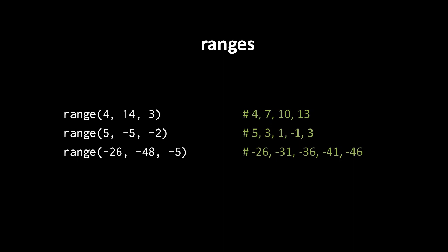In the second range example, we have a starting value of positive 5, an end value of negative 5, and a step of negative 2. So we start out at 5 and go to 3, 1, negative 1, negative 3. Negative 5 itself is not included because negative 5 is less than or equal to the specified end value, which is negative 5. And finally, a range starting at negative 26, going to negative 48 with a step of negative 5, gets us: negative 26, negative 31, negative 36, negative 41, negative 46 — we don't include negative 51 because it is less than or equal to the end value of negative 48.